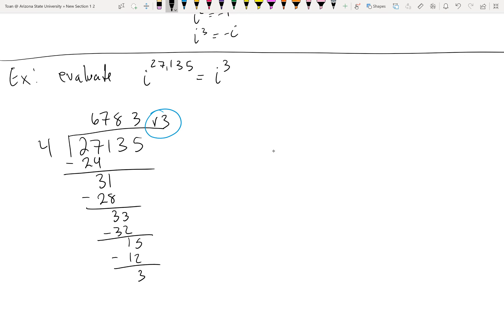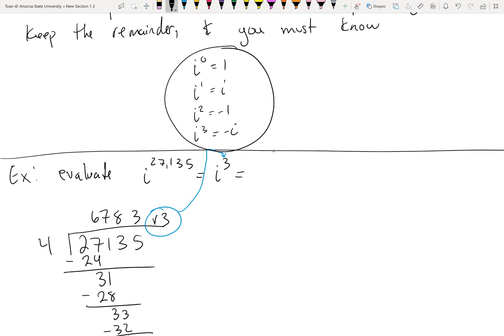So all of this work tells me that I to the twenty-seven thousand one hundred and thirty-five is the same thing as I cubed. That's all that long division tells me. And me memorizing this list here knows that I cubed is negative I. So easy peasy. The powers of I, they keep cycling over and over and over.